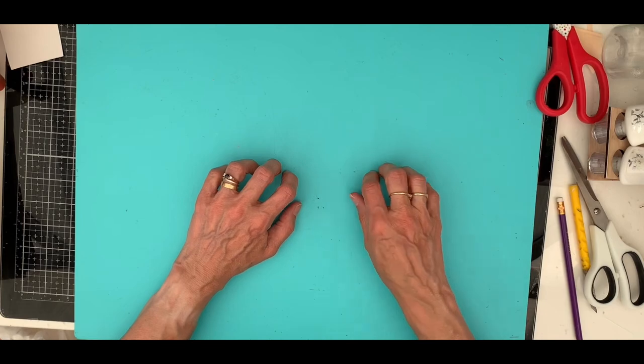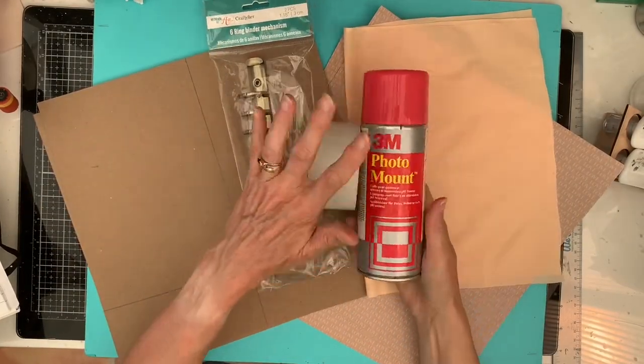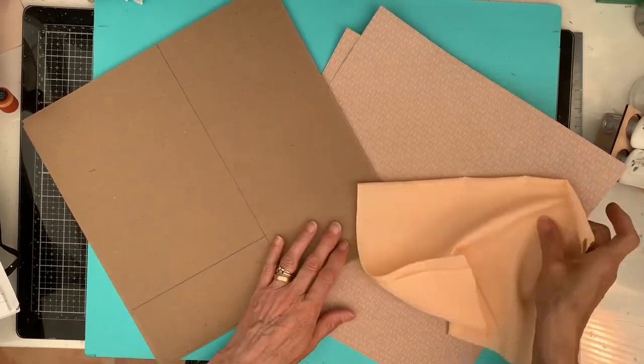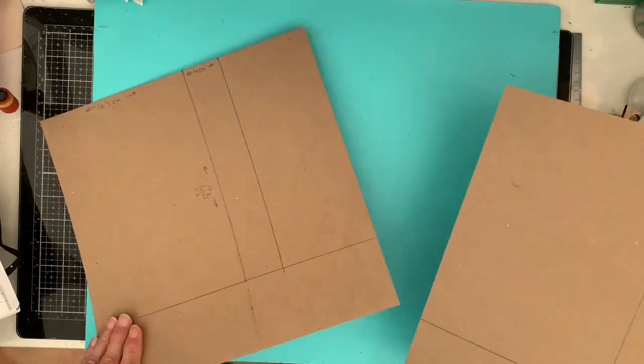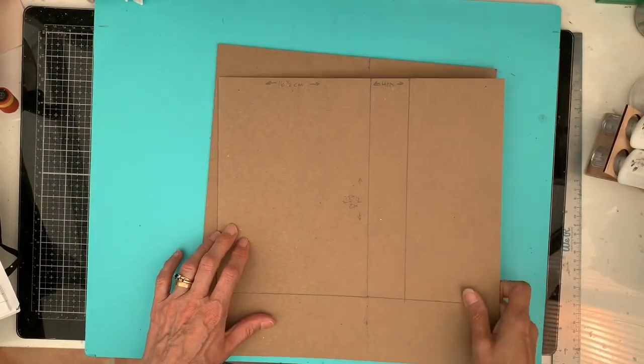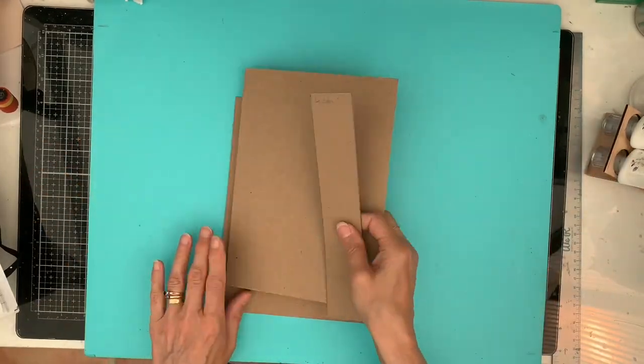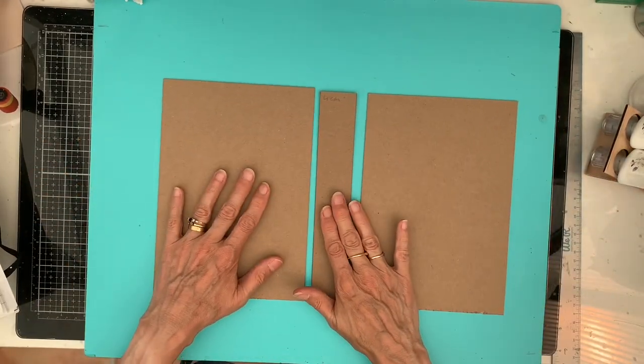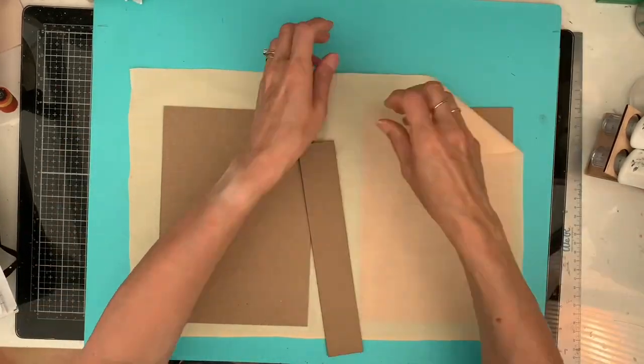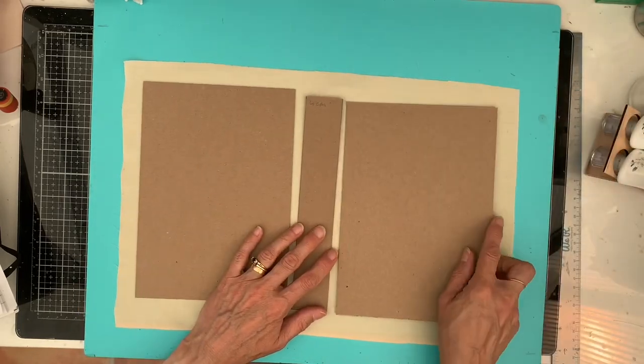So here we are with all the bits and pieces: the ring binder inserts, some spray mount, fabric, the chipboard, and some paper to put on the inside of the albums. So I've measured out the chipboard. It's 16 and a half centimeters wide by 23 and a half centimeters tall. And you need two of those for the front and the back, and then one piece which is 4 centimeters wide and 23 and a half centimeters tall. And then the fabric, I allowed 2 and a half centimeters all round to allow it a nice fold in so it's got plenty to stick down.